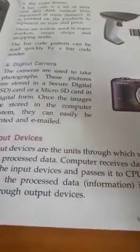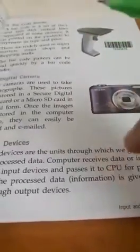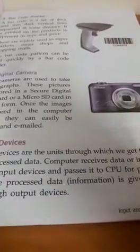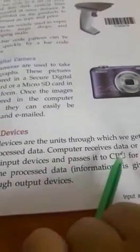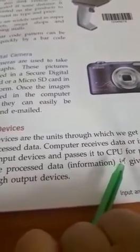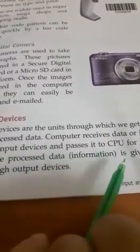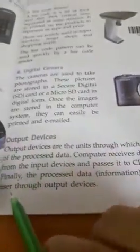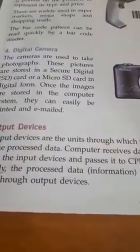Let me explain the process. First, we type the input — for example, we give instructions through the keyboard. That is our first stage. The CPU then processes the data. Finally, the processed data or information is given back to the user through output devices, which display all the information.